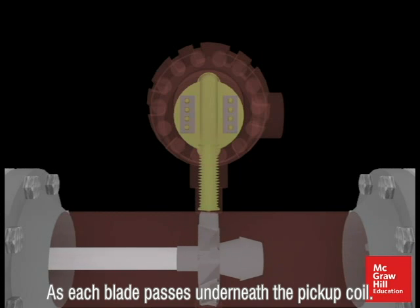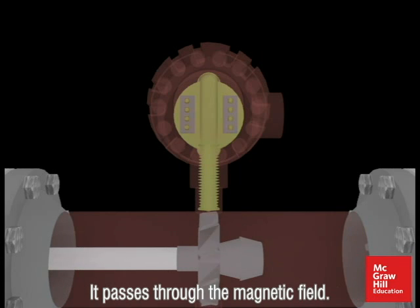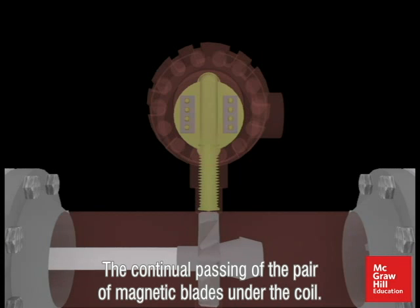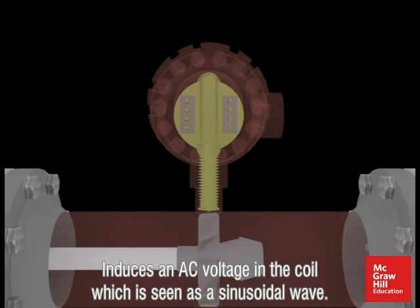As each blade passes underneath the pickup coil, it passes through the magnetic field. The continual passing of the paramagnetic blades under the coil induces an AC voltage in the coil which is seen as a sinusoidal wave.